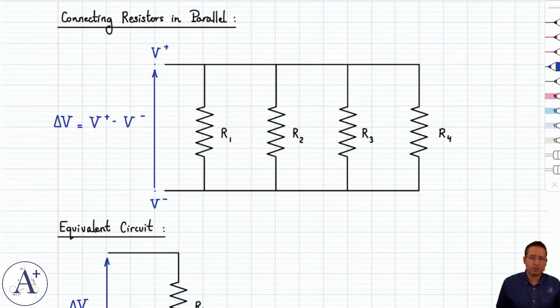Let's now define what it means for resistors to be connected in parallel and derive a formula to compute the equivalent resistance of resistors connected in parallel.